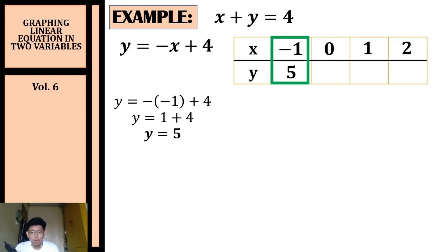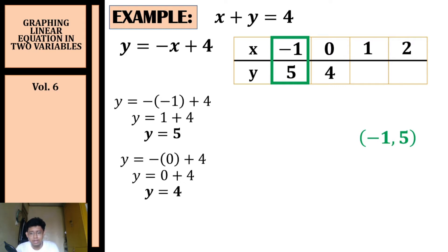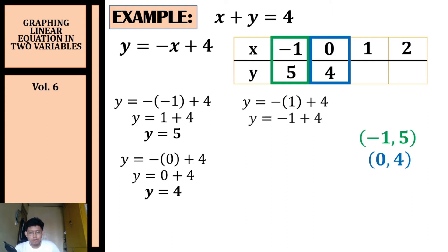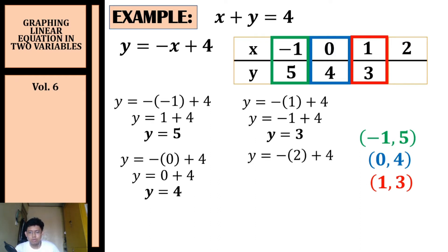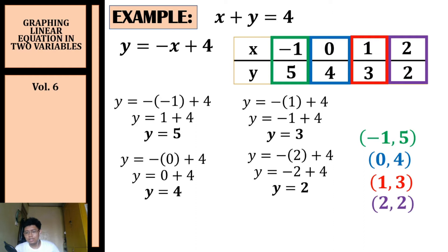Substituting x equals zero, we get y equals negative zero plus four, so y equals four — coordinate (0, 4). Substituting x equals one, we get y equals negative one plus four, so y equals three — coordinate (1, 3). Substituting x equals two, we get y equals negative two plus four, so y equals two — coordinate (2, 2).